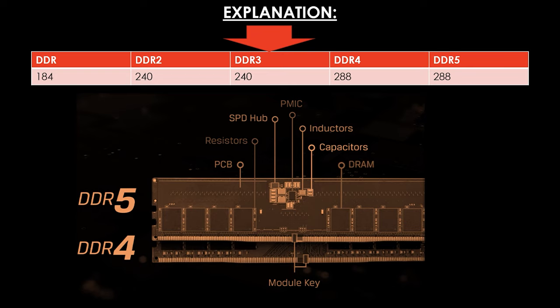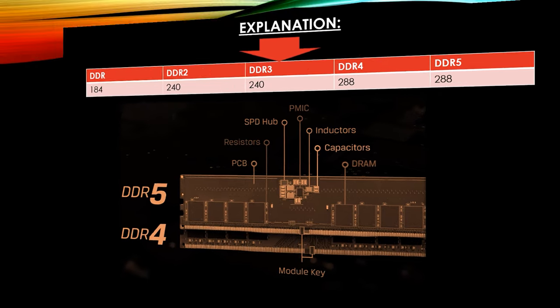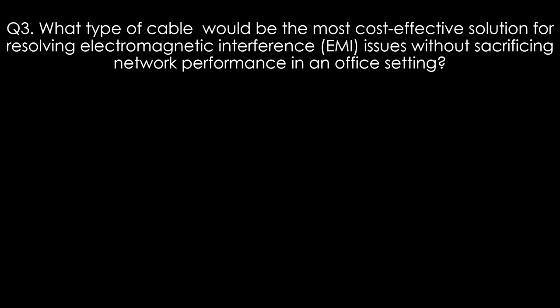If it is a laptop it will be SO-DIMM and the pins are different. On the DDR4 the module key is positioned differently compared to DDR5 where it is around the middle — that is also a difference. But in this question it is all about the pin count.